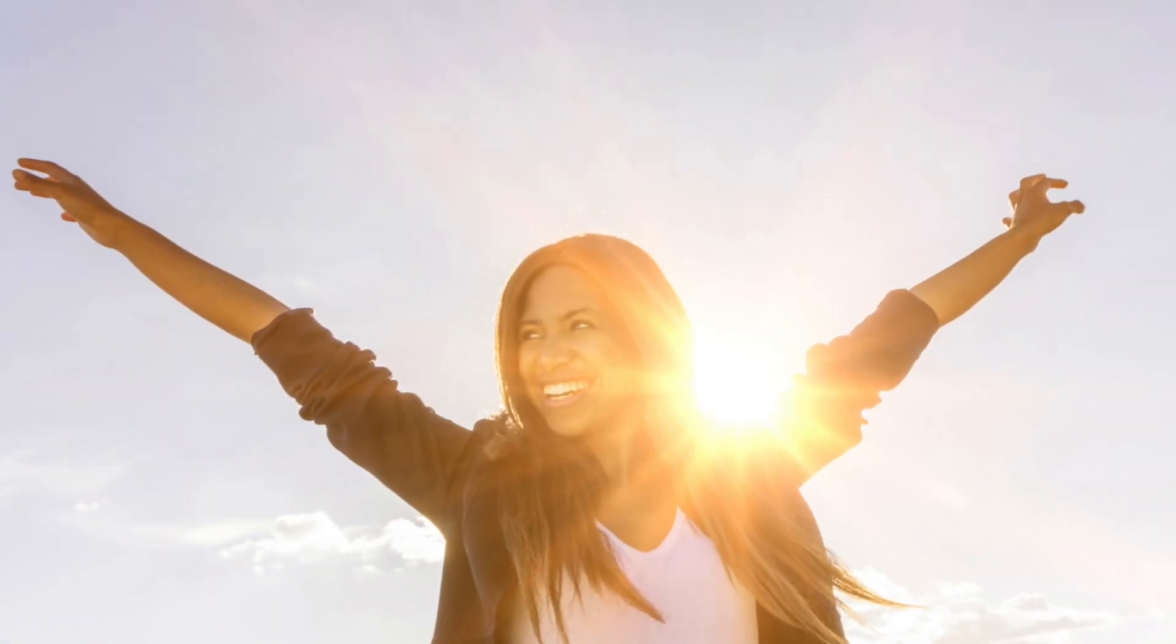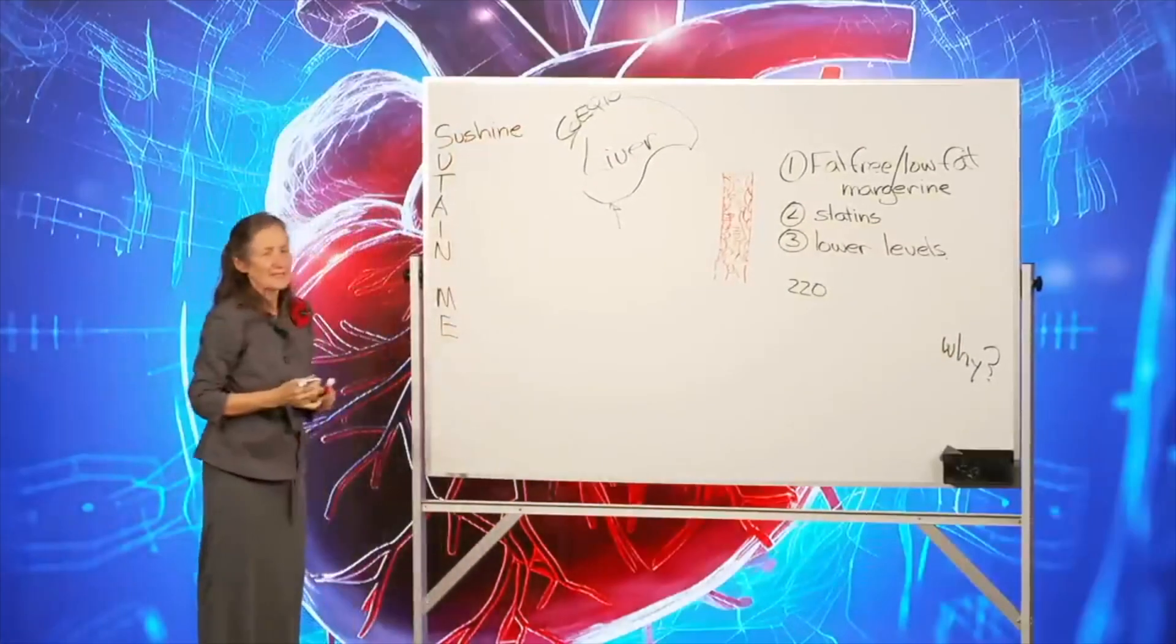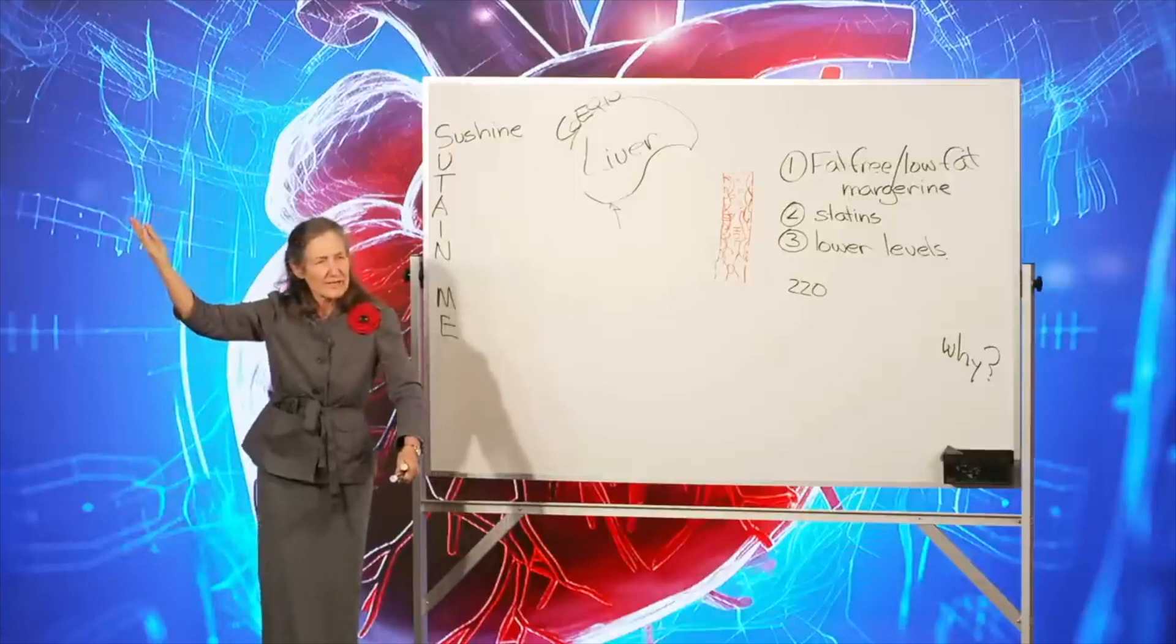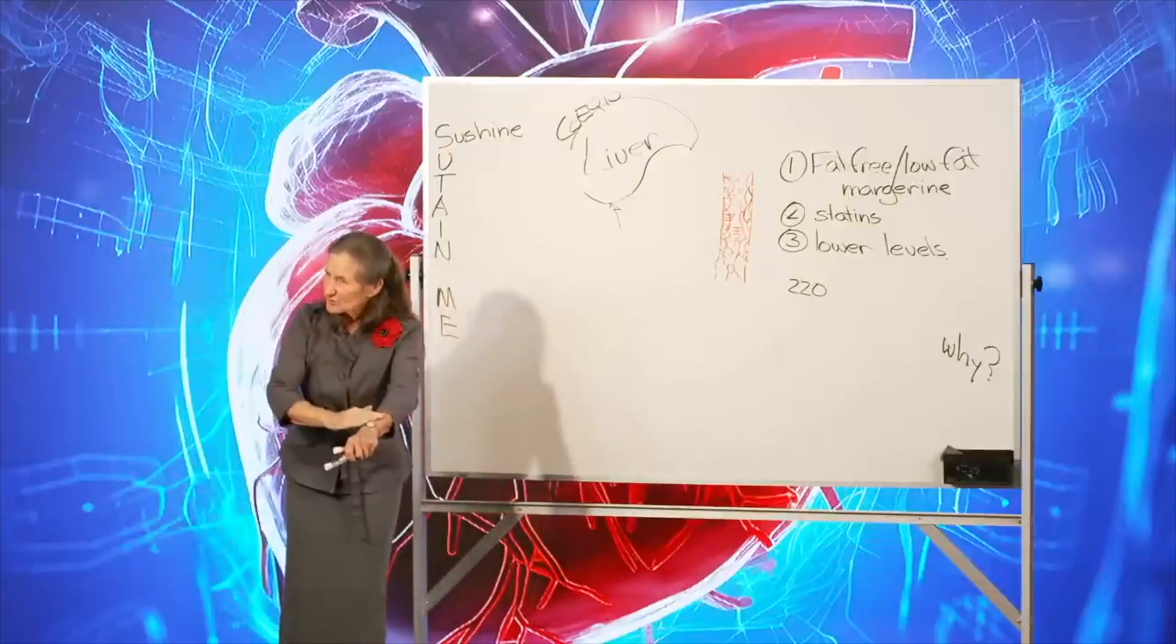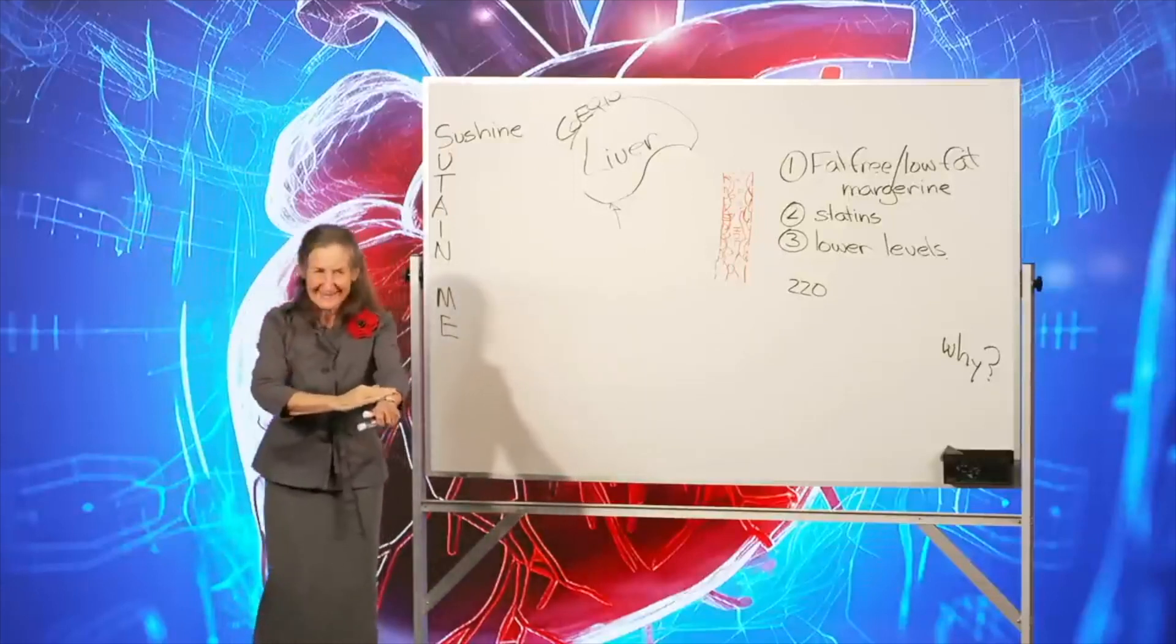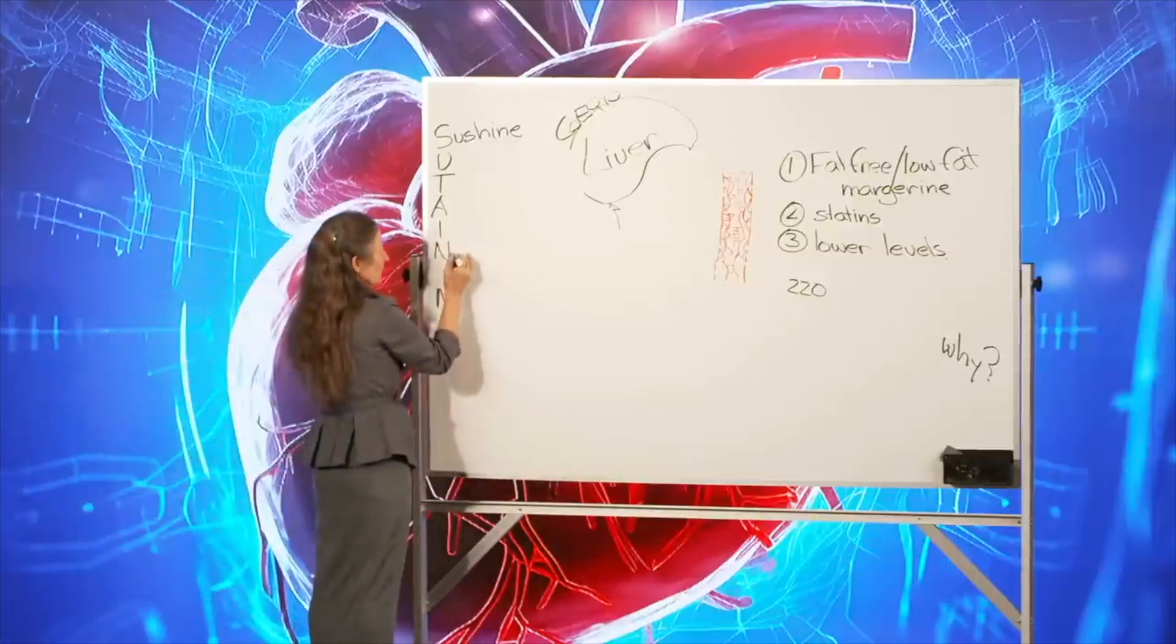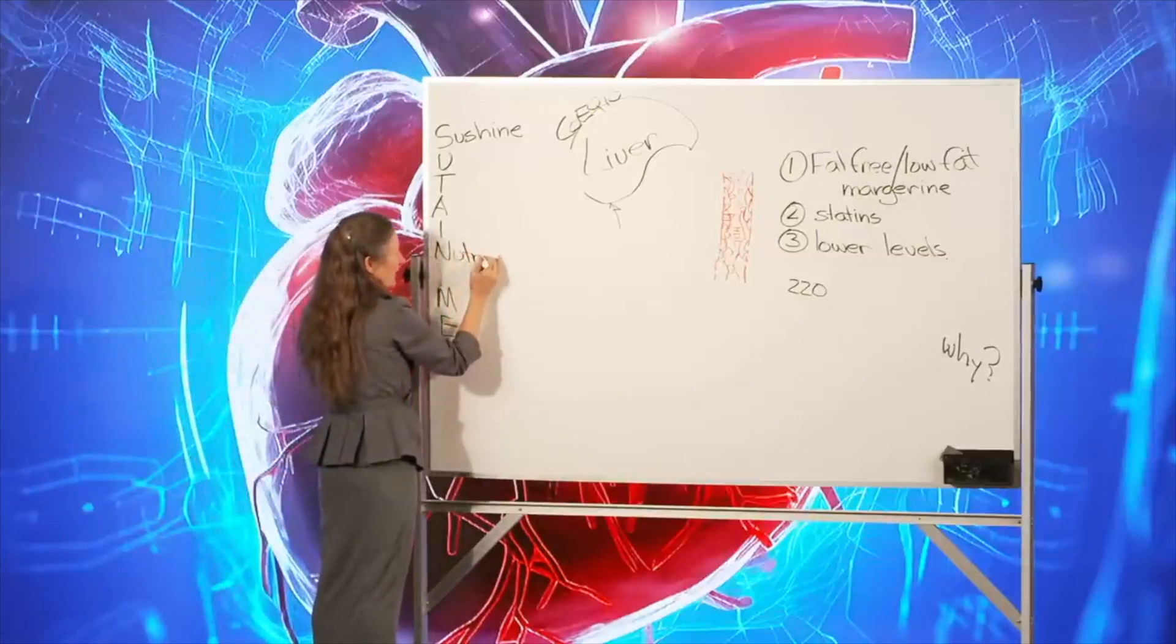Sunshine. Why do we need sunshine for our heart? Because vitamin D is necessary. But remember, the ultraviolet rays from the sun hit a form of cholesterol just under the skin to make vitamin D. And so, in our nutrition, we need to be having good amounts of fats.